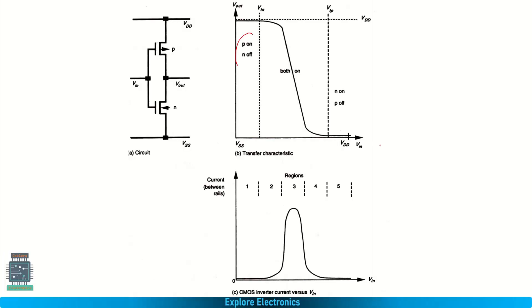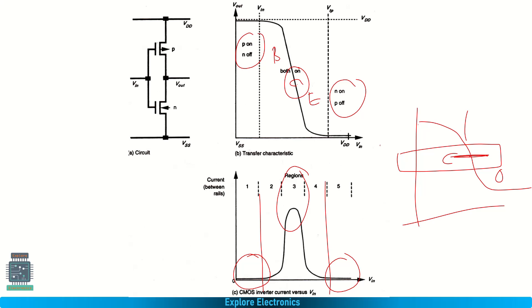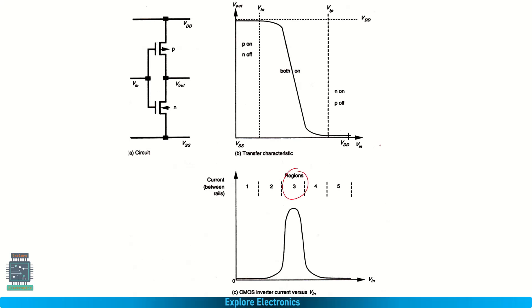In region A, P transistor is on and N transistor is off, so there is no continuous current. In region E, N transistor is on and P transistor is off, so again no current. Maximum current flows in region C — the switching point. When we switch from logic 1 to logic 0, maximum rail-to-rail current flows at region C. This static current flow only happens in region C, with less current in regions B and D. This is all about the DC characteristics as well as the IV characteristics of the CMOS inverter.